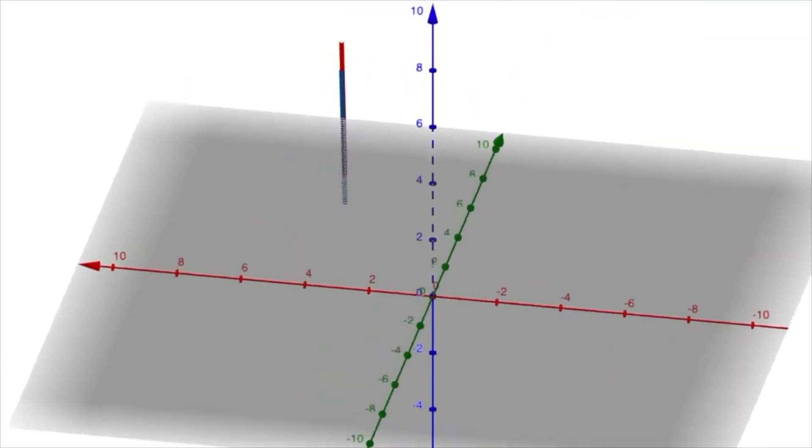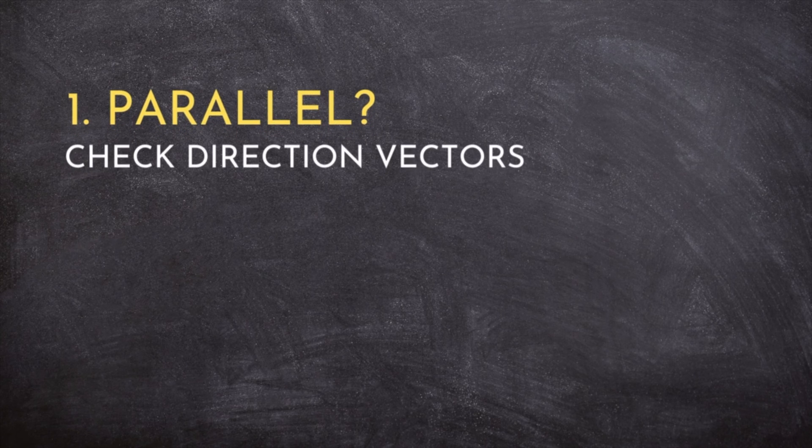Anytime you want to know how two 3D lines intersect, it's always best to check to see if they are parallel first.